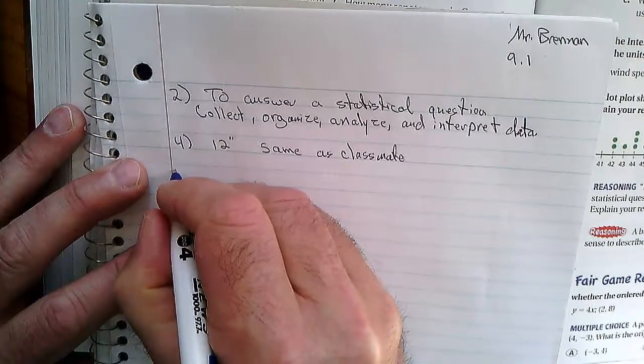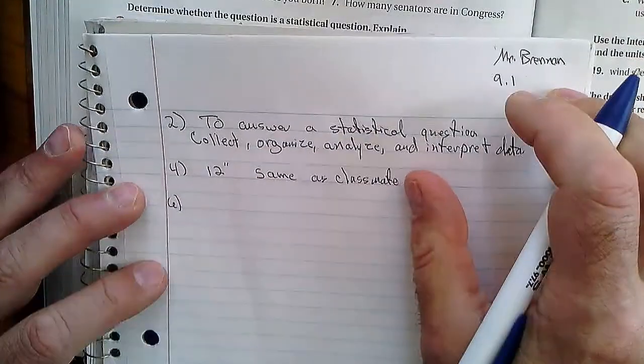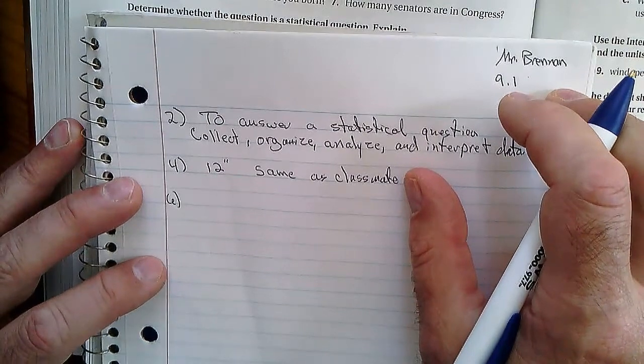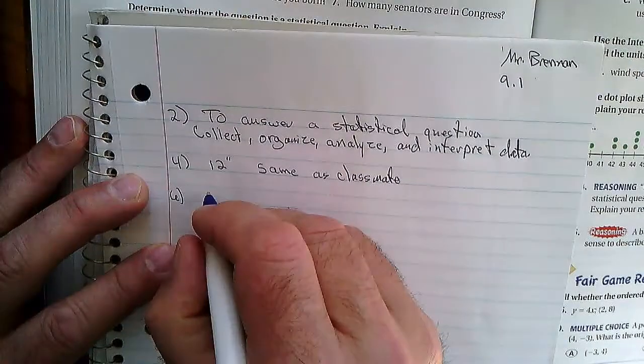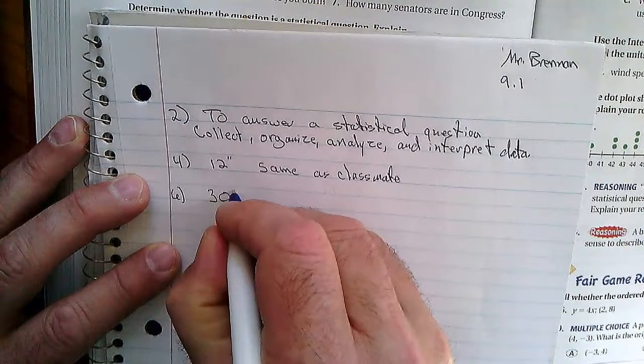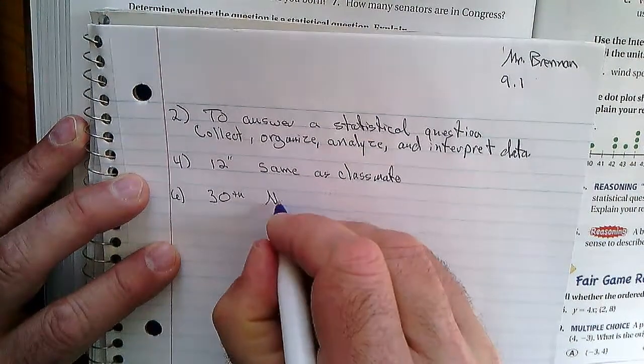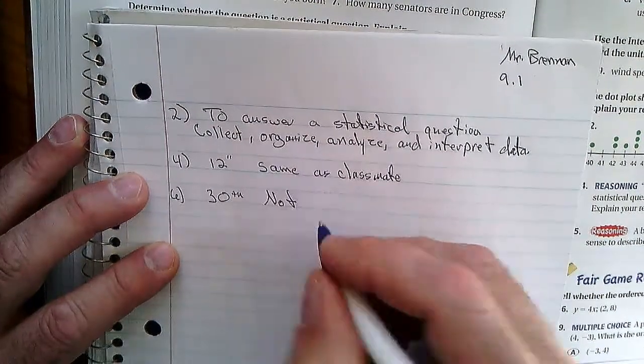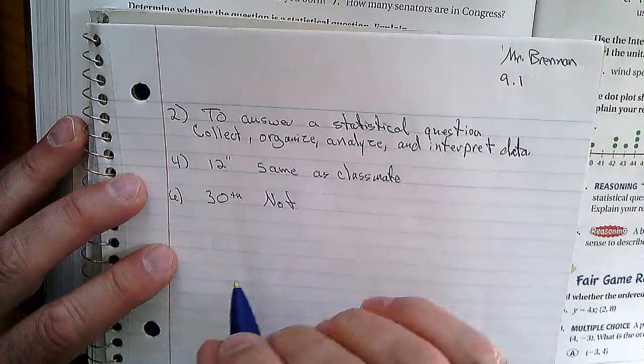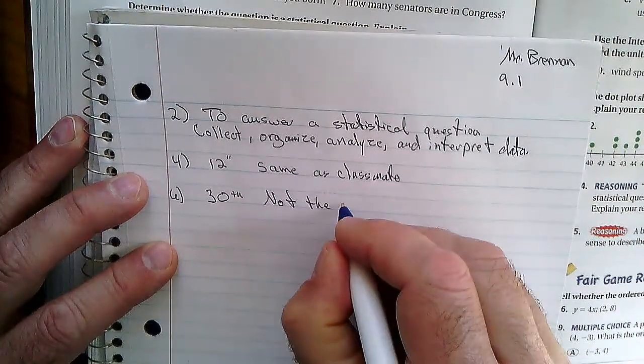Number six: on what day of the month were you born? Well, I was born on the 30th, and I would say that's probably not the same. It could be the same as one but not all my classmates.